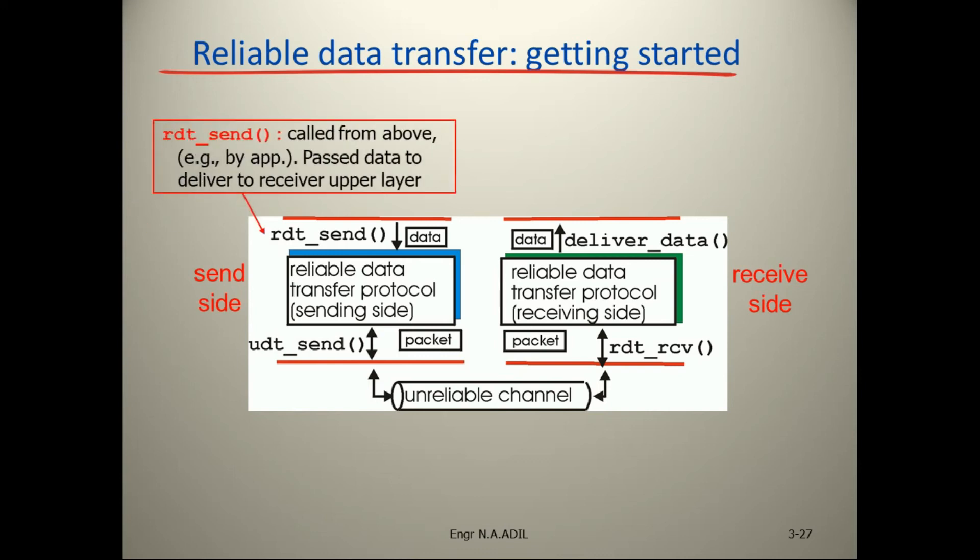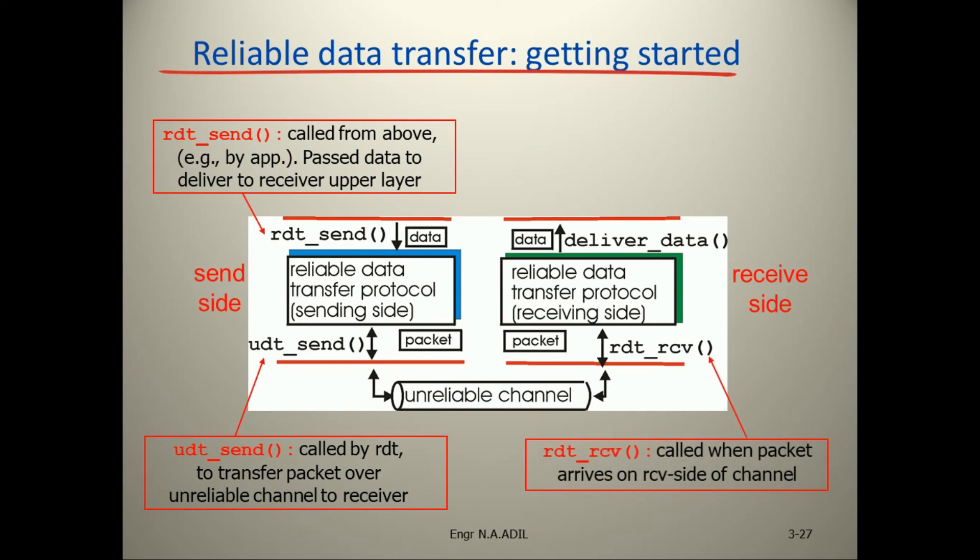This is called when a packet arrives on the receiver side of the channel and delivered data is called by RDT to transfer the packet over the unreliable channel to the receiver. This is called when the packet arrives on the receiver side of the channel.